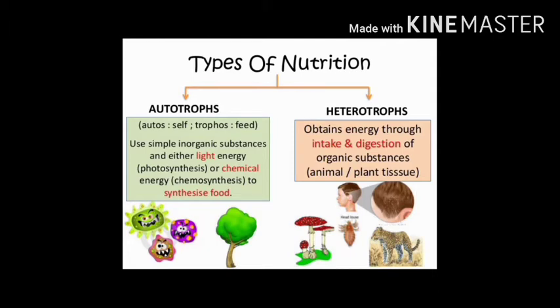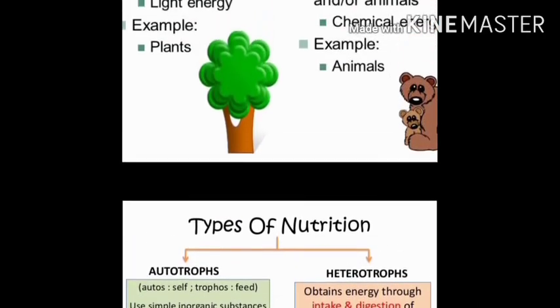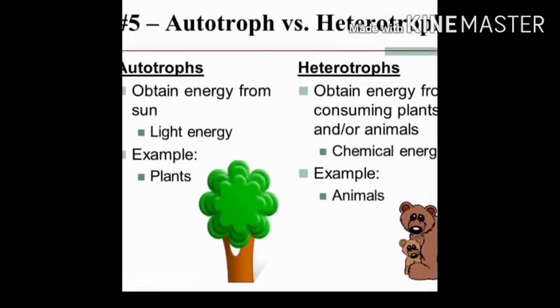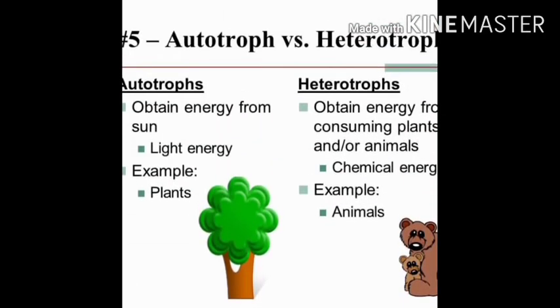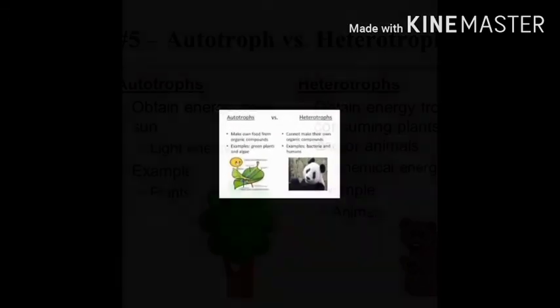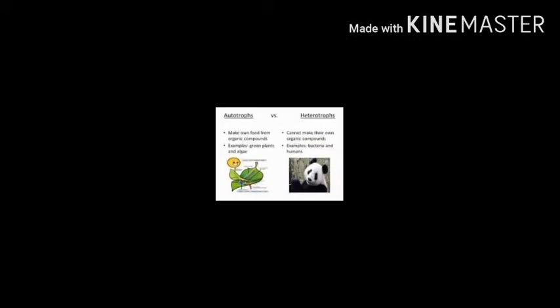On the basis of food habits, organisms are classified into two types: autotrophs and heterotrophs. 'Auto' means self and 'trophos' means feeding, therefore autotrophs are organisms which make their own food, like all green plants, which can make their own food by the process of photosynthesis.